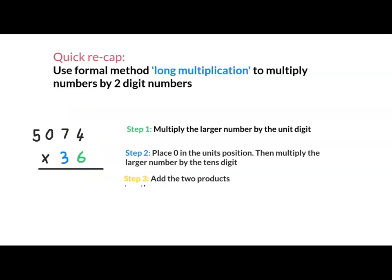Here's a larger number, 4 digit number, 5074, multiplying it by the 2 digit, 36. Step 1. Let's multiply the larger number by the unit digit. 6, 4's are 24.